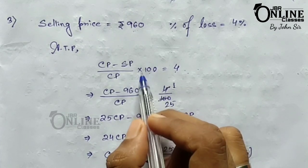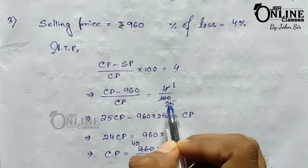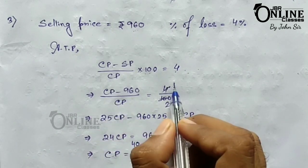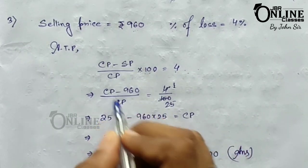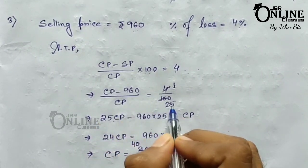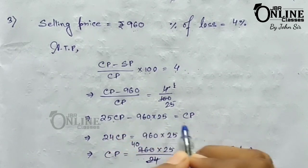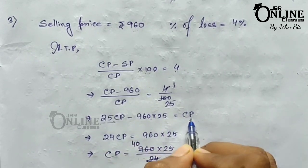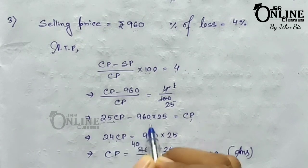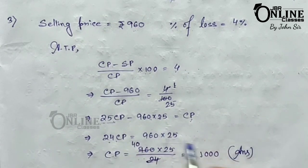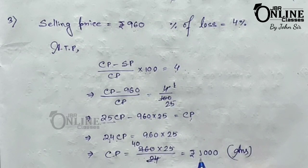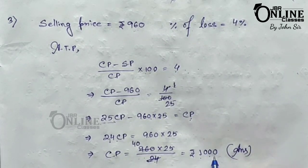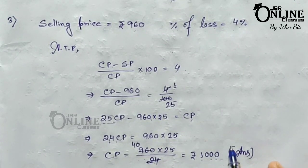Simplifying 4/100 gives 1/25. Cross-multiplying: 25 × CP = 960 × 25 + CP, which gives 25CP minus CP = 24CP. So CP equals (960 × 25) divided by 24, which equals rupees 1000. The cost price for problem number three is rupees 1000.